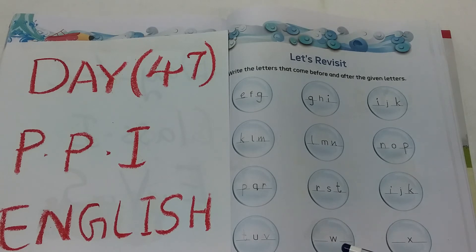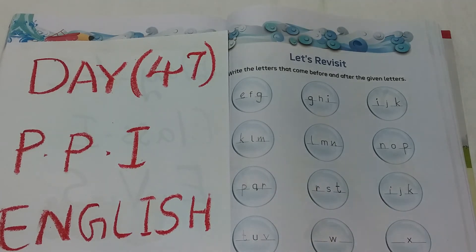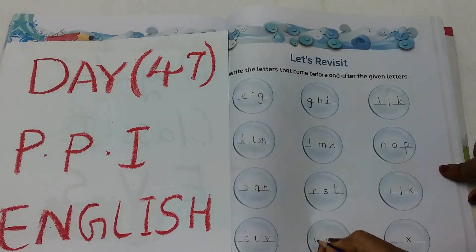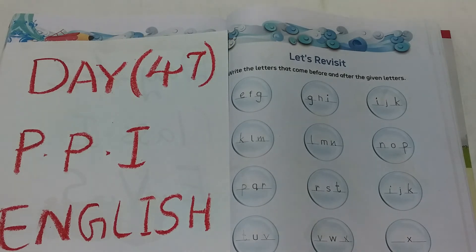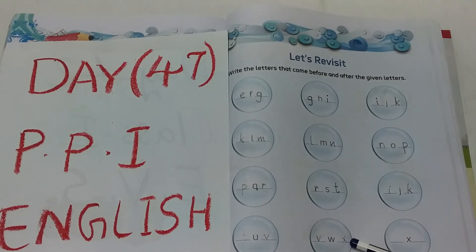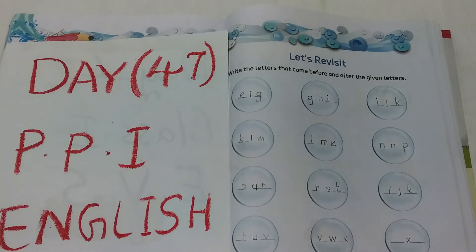Now see the next circle. Letter W. W before V. V, W, X.